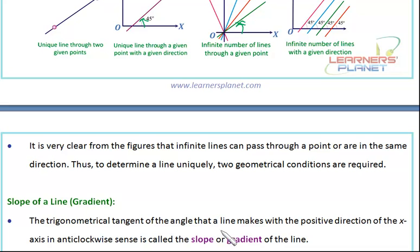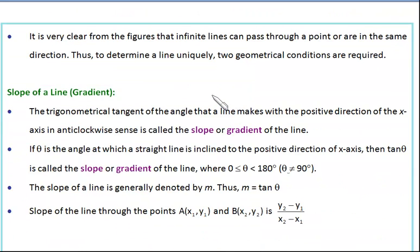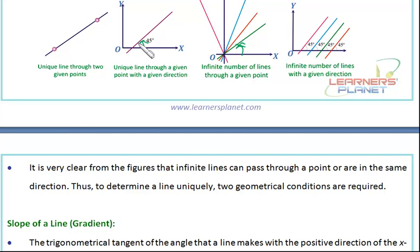The trigonometrical tangent of the angle that a line makes with the positive direction is known as slope. So if the angle is 45 degrees, the inclination is 45 degrees but the slope will be tan 45 degrees. Now, if theta is the angle at which a straight line is inclined to the positive direction of the X-axis, then tan theta is called the slope or gradient of the line, where theta is between 0 and 180 degrees. It's very important that you take the direction as anticlockwise.